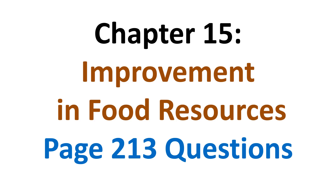Dear students, NCERT 9th class science book chapter number 15, Improvement in Food Resources. Four questions are listed on page number 213 of this chapter in two separate groups. We are going to do all four questions in this video. They have only very small brief answers, so listen carefully and note down all the answers, and later on practice writing these answers on your own.